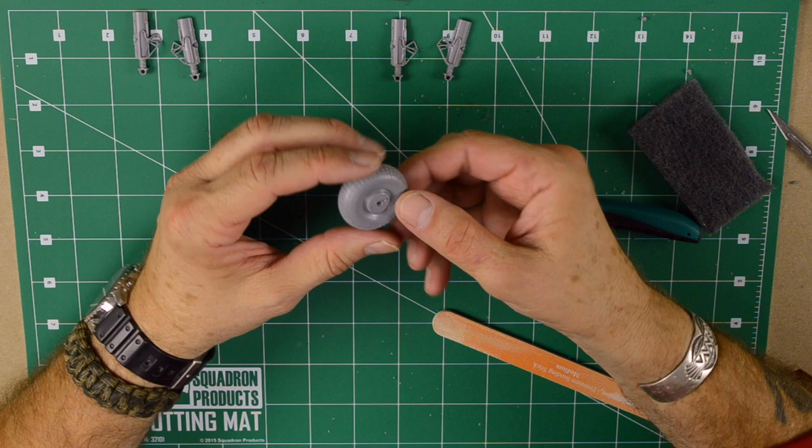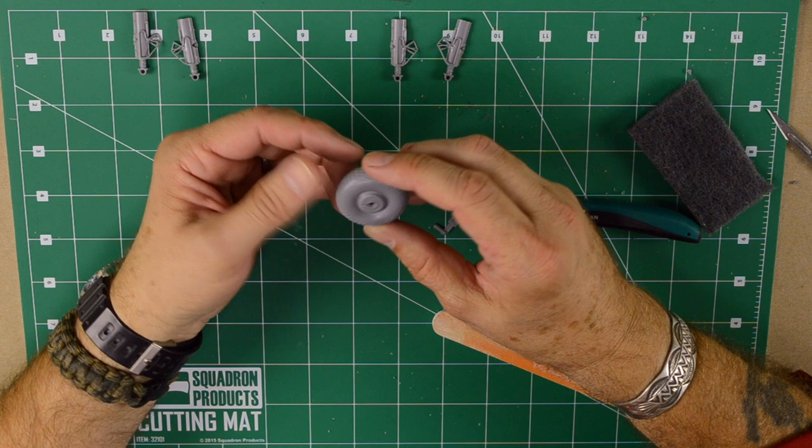But I can't see any seam or seam line or inconsistency. It's just a wheel that's perfectly thought out and perfectly engineered.